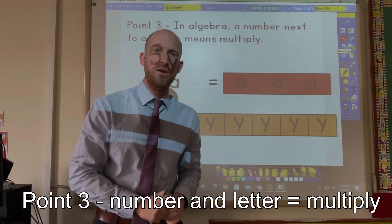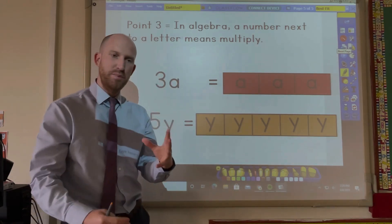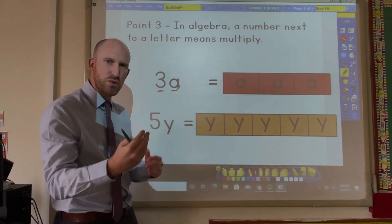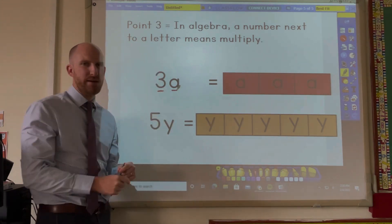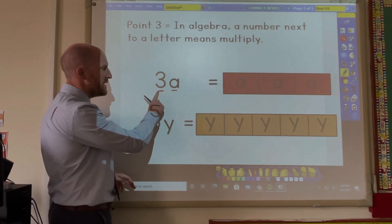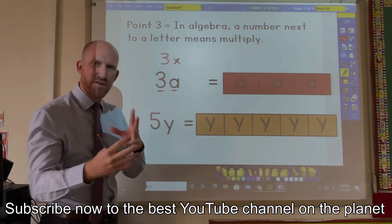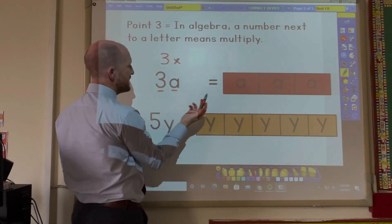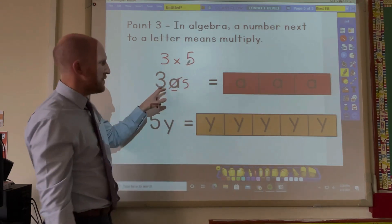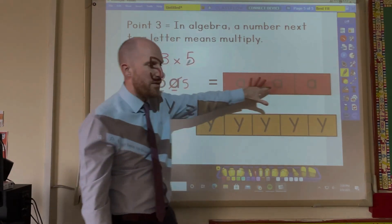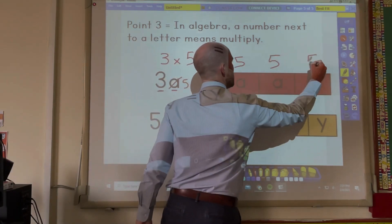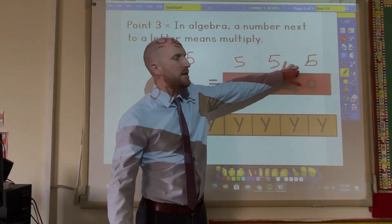Now the third and final thing we need to understand when we are first being introduced to algebra is that if you have a number that is next to, very close to a letter, then it means to multiply. So can you see how this says 3A? So this means 3 multiply whatever A is. So if I know that A is 5, so let's say that A is 5, what I'm actually doing is 3 times 5. So 3A can be represented by, if I know that A is 5, A is 5, A is 5. Then I know 3A is 15.